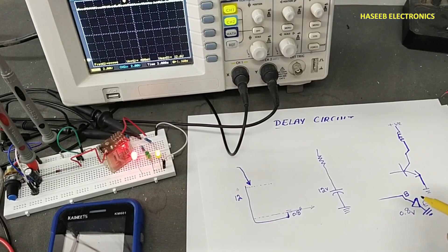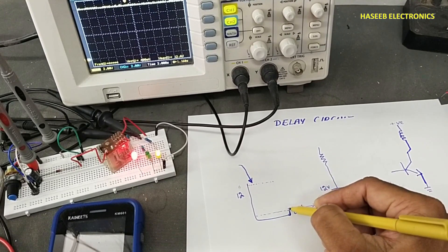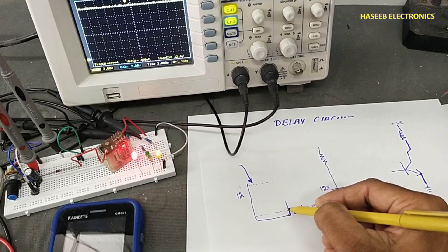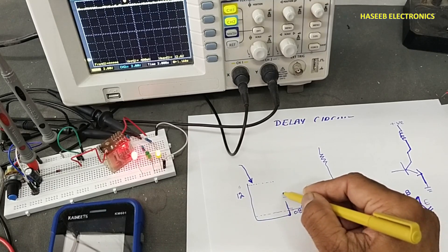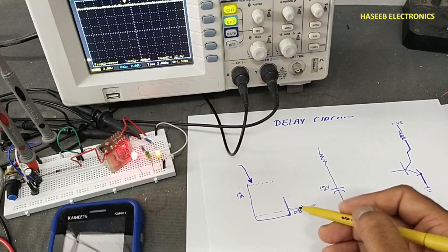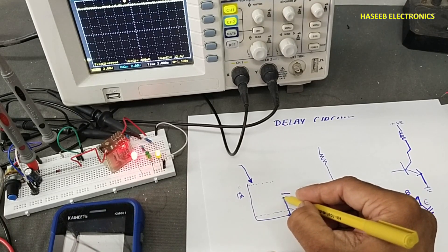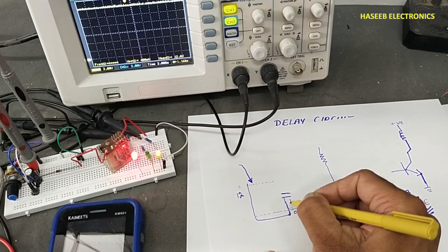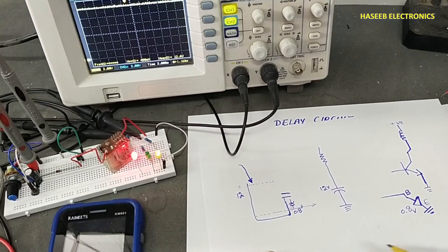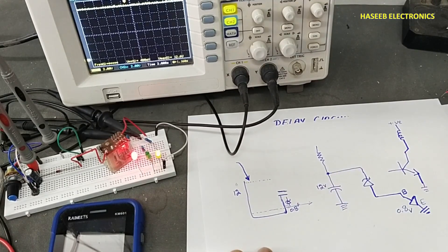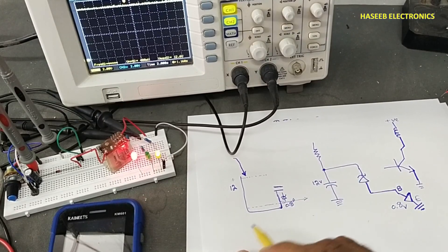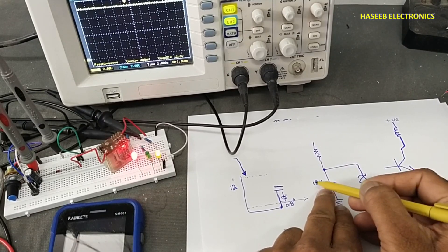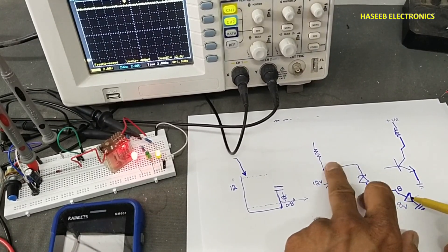But now if we add some more height here and take the output from a higher point — how can we raise this level? We are adding a zener diode here. When we connect the zener diode, it will allow the capacitor to charge up to 0.8 volt plus the zener voltage before the transistor switches.